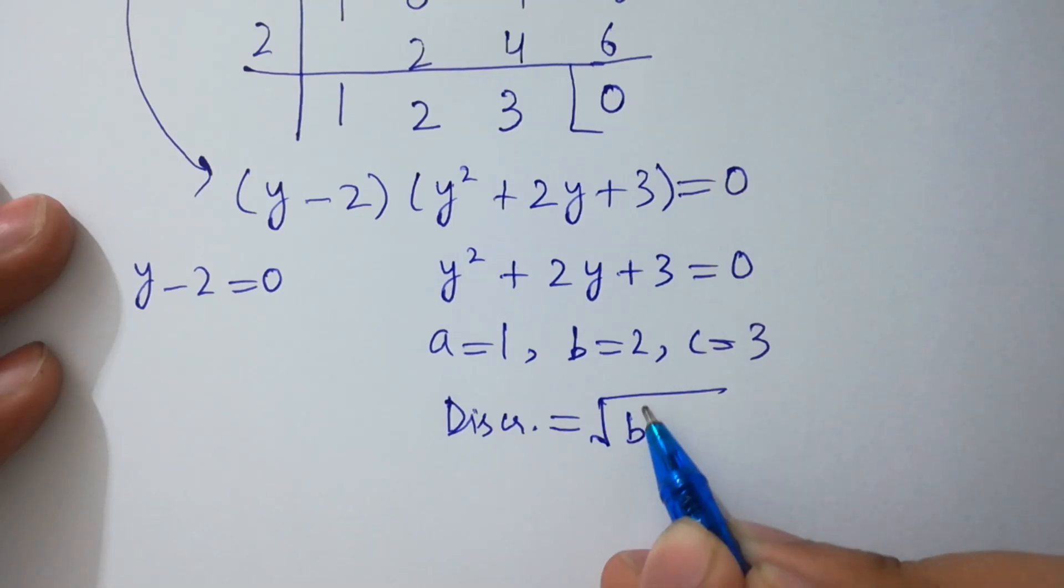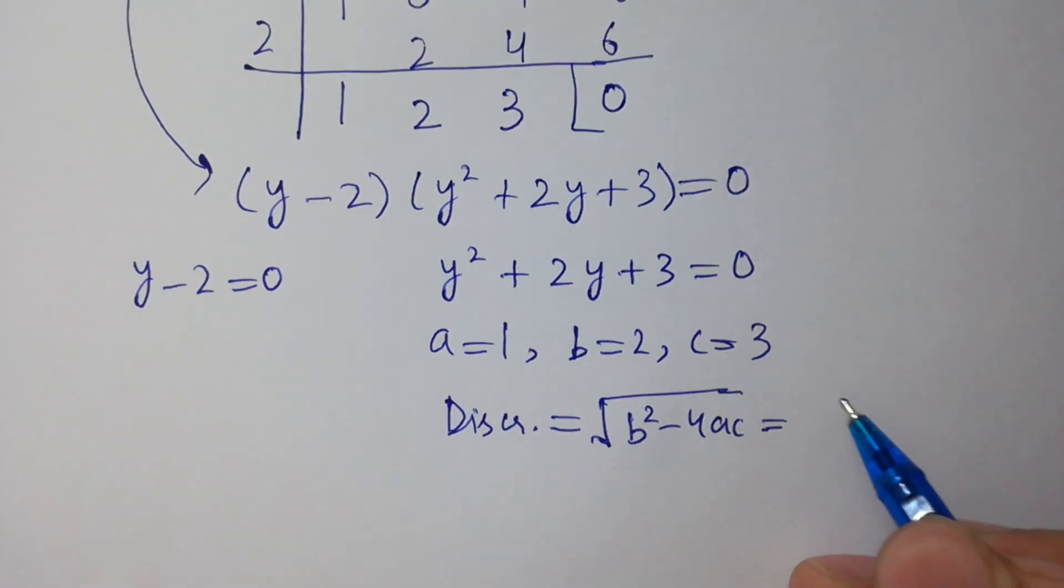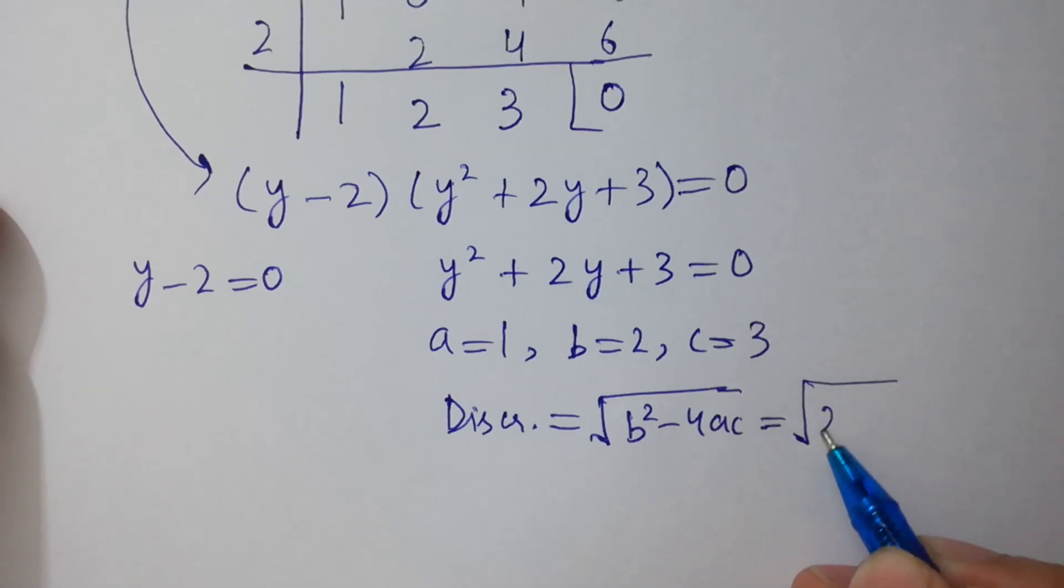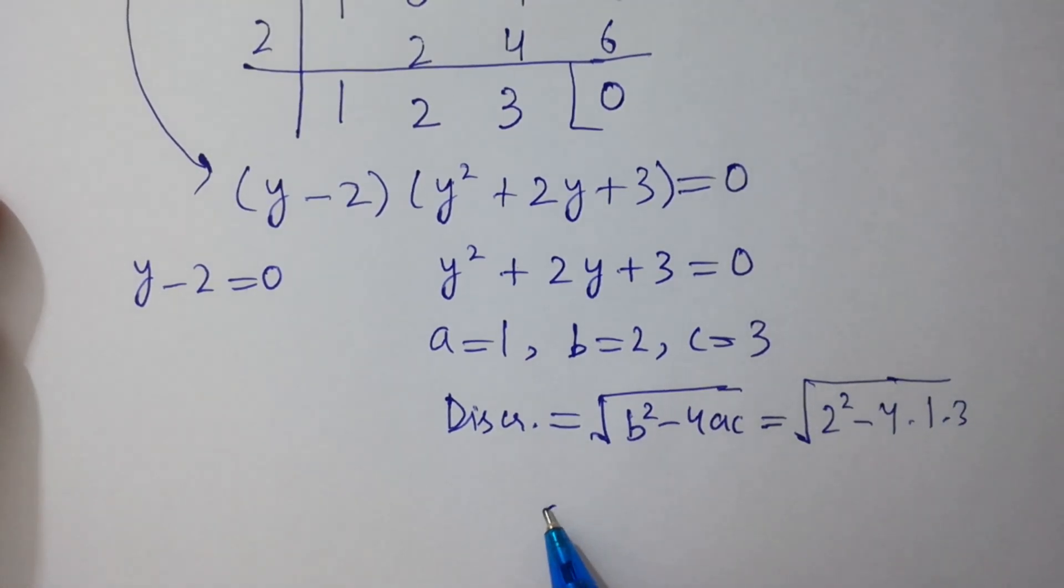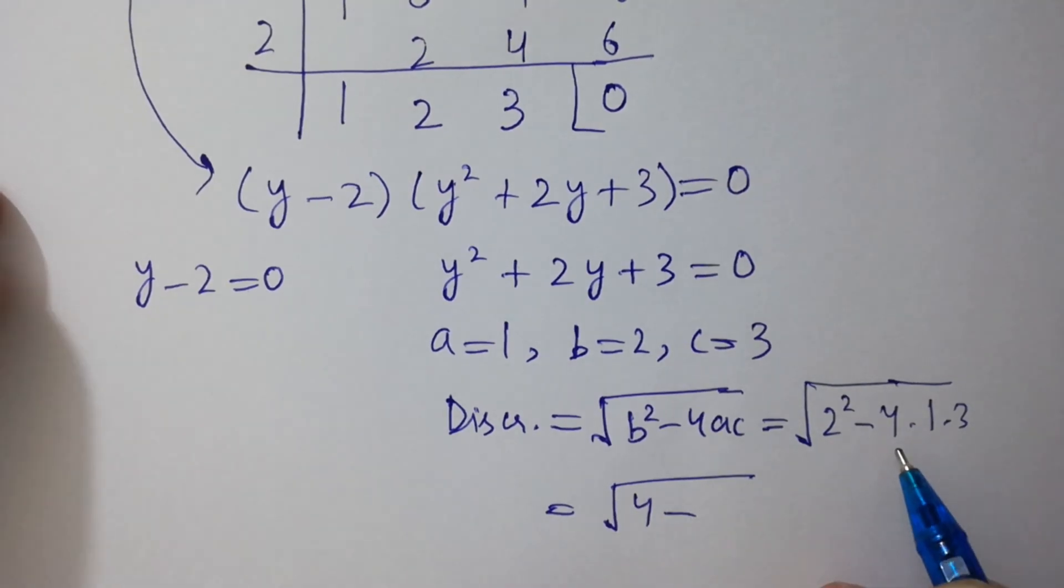b square minus 4ac, discriminant is, we get, b is 2 square minus 4, a is 1, c is 3, 4 minus 4 times 3.